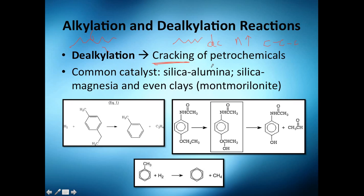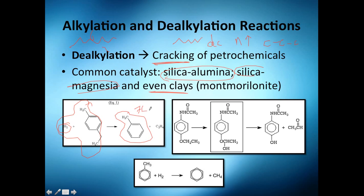The most common cracking catalysts are silica-alumina, silica-magnesia, and even clays. In a cracking example, you add a little hydrogen and break a nine-carbon molecule down: you get a seven-carbon molecule and a two-carbon molecule — one plus two plus three plus four plus five plus six plus seven plus eight plus nine, nine carbons total.